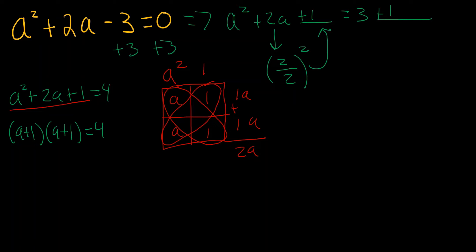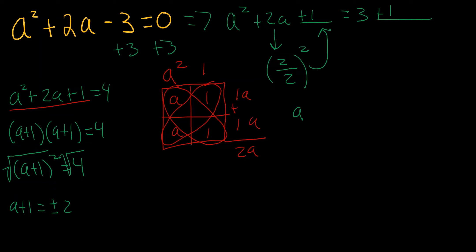So now (a + 1)(a + 1) equals 4, which I can rewrite as (a + 1)² = 4. Taking the square root of both sides gives a + 1 = ±2. For the positive case, a + 1 = 2, and subtracting 1 from both sides gives a = 1.